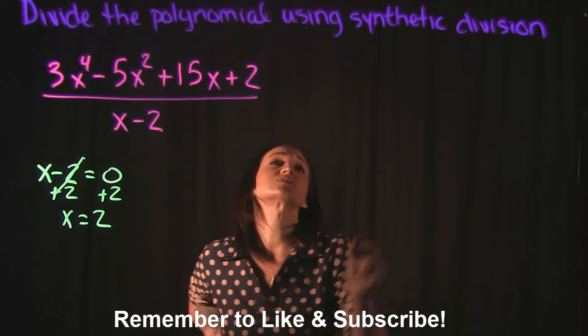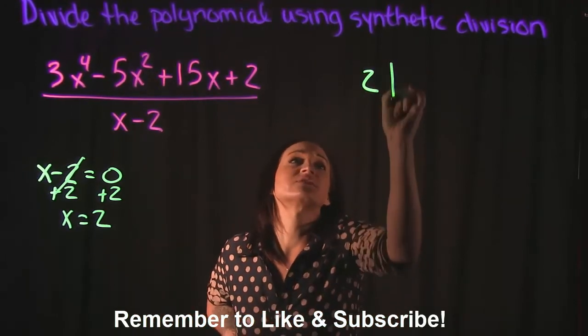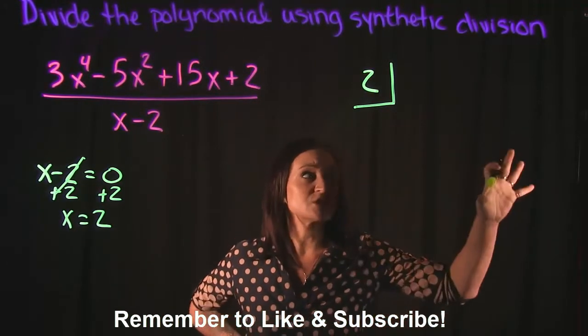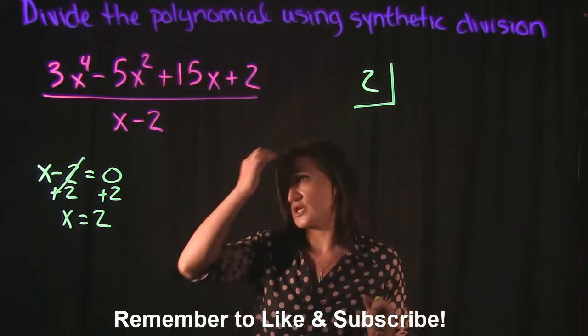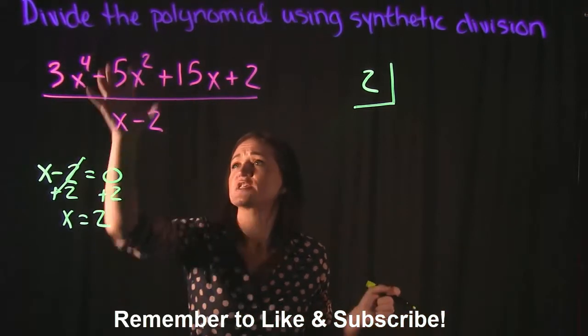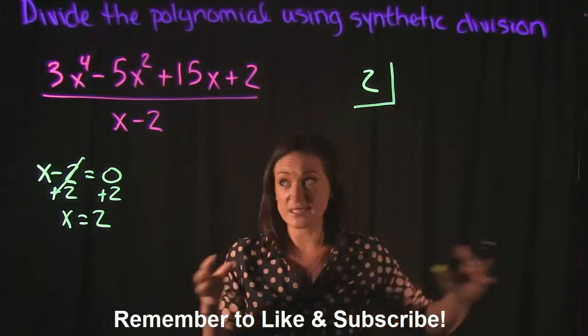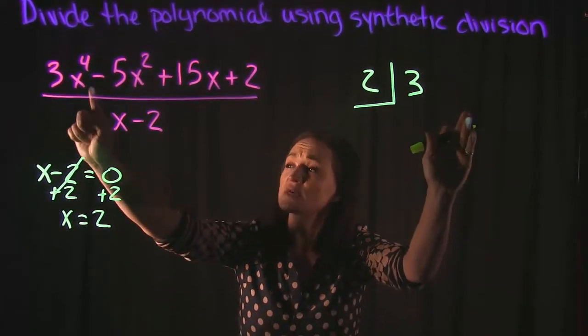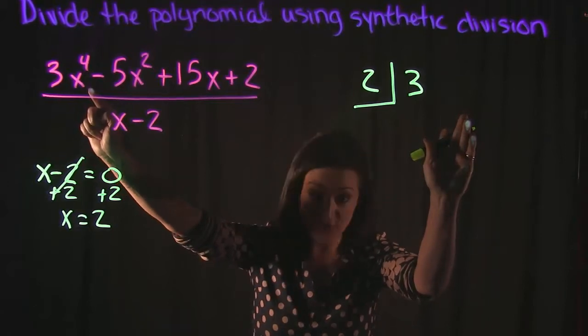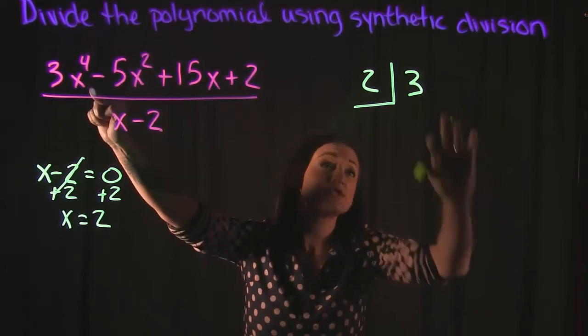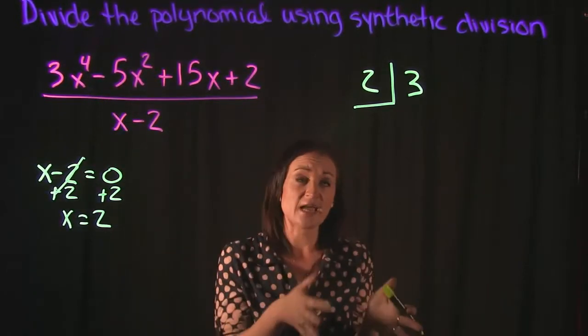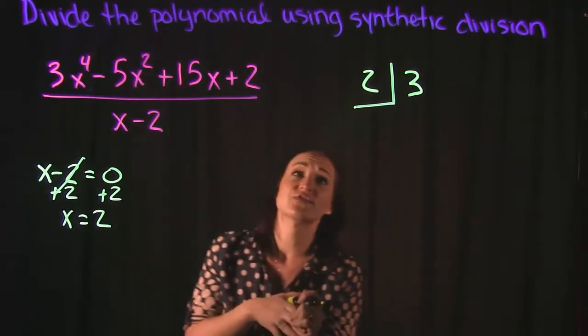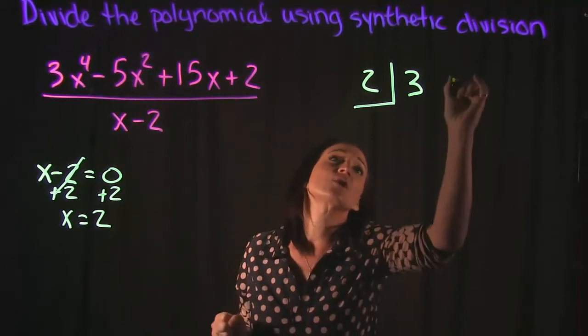So 2 is going to be the number that we're dividing by here. And when we set up our synthetic division, we pull the coefficients of all of our terms in descending order. So starting with 3, notice that we don't have an x to the 3rd power term, but we do still need to take that into consideration. So since we're missing that term, we represent it by using a 0 for that spot.